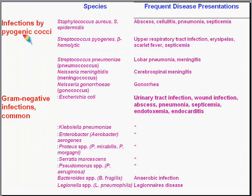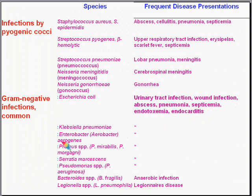The second category is gram-negative infections, and almost all gram-negatives are bacilli, so the terms gram-negative infection and gram-negative bacilli can nearly be used interchangeably. They are the single biggest, most common causes of urinary tract infections, wound infections, abscesses, many types of pneumonias, and septicemia. They can also exhibit endotoxins and cause endocarditis. E. coli is always at the top of the list as the most frequently implicated gram-negative rod.